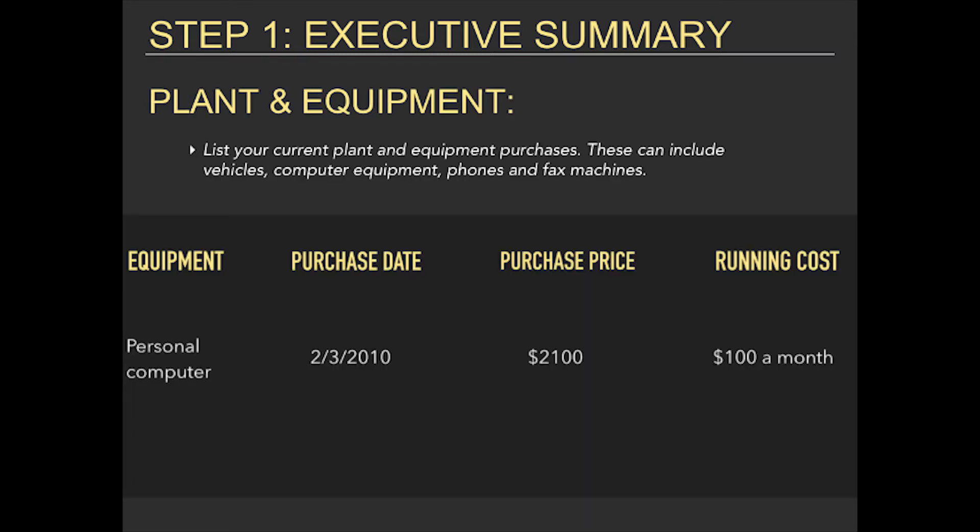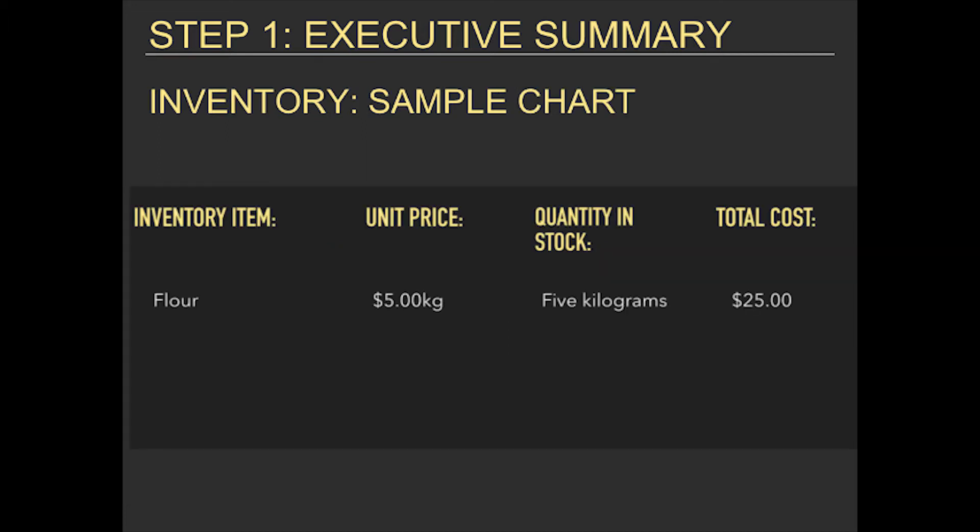Plant and equipment: list your current plant and equipment purchases — these can include vehicles, computer equipment, phones, and fax machines. Inventory: list your current inventory items in the table provided. If you have substantial inventory, you may prefer to attach a full inventory list to the back of your business plan.